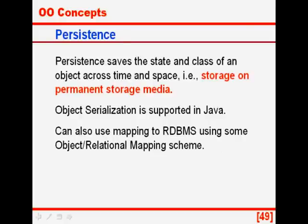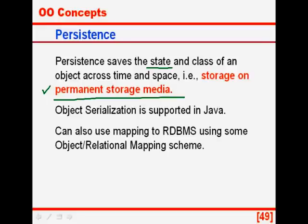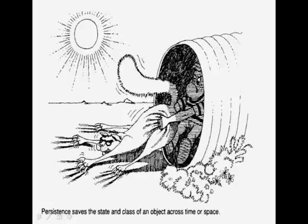Another major issue is persistence, a major issue in modern object oriented programming languages. How do we store the state of a class or an object in permanent storage media? While the program is running, the values of the variables are stored in RAM — volatile memory. How do we store it in permanent storage so that we can close the program, restart it later, and get back the values? Different techniques are available: object serialization is supported in Java, C# and many other languages. This also leads to different schemes of storing objects in a relational database management system using what are known as object-relational mapping schemes. Here we are trying to store the cat in permanent storage — picture from the Grady Booch book.